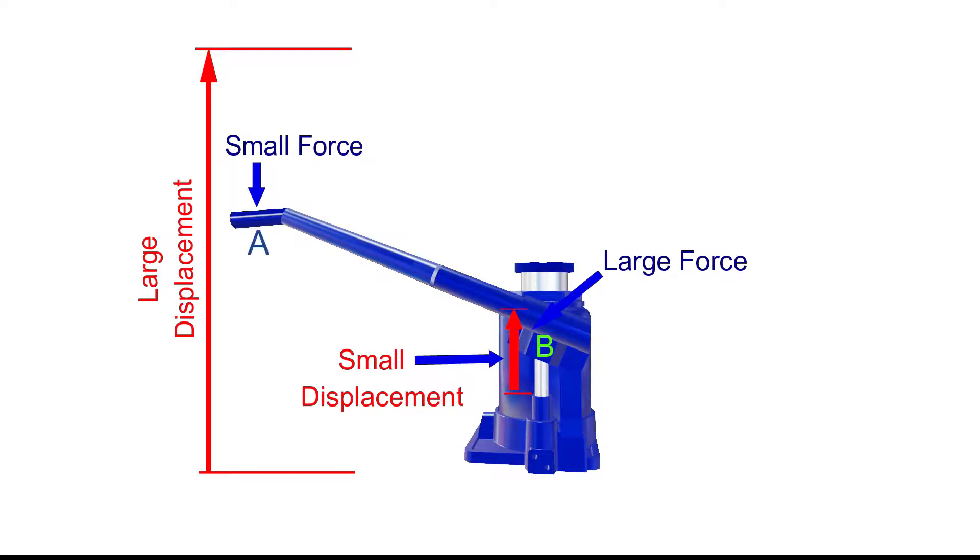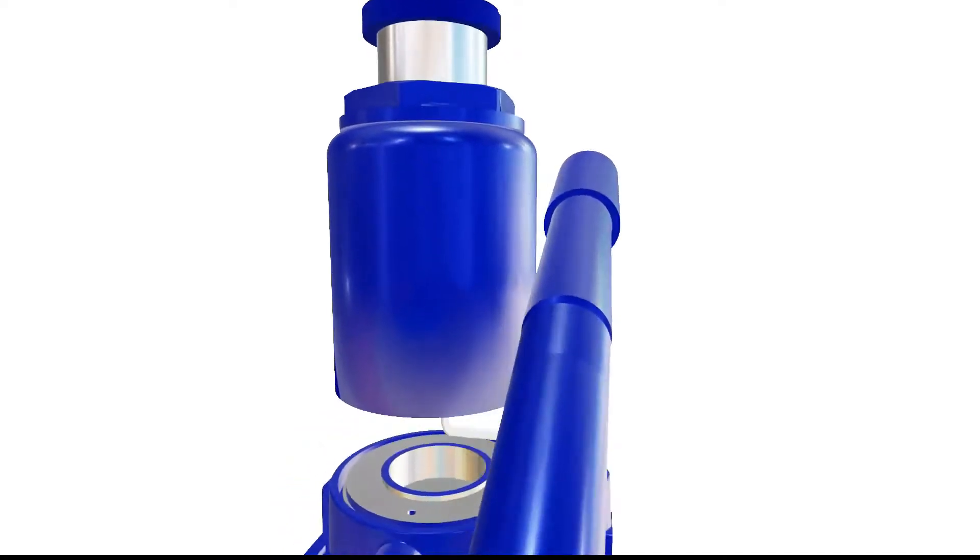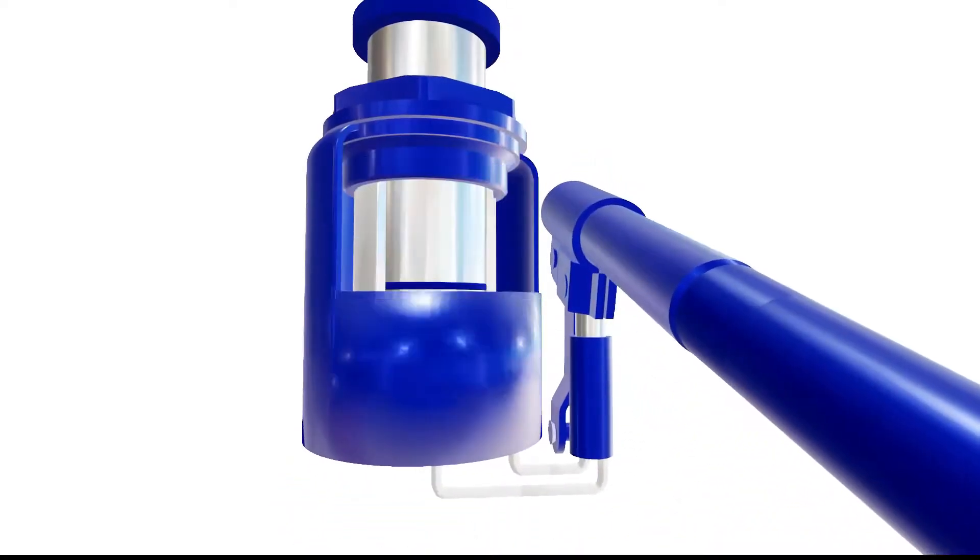If we apply a small force at the point A of the lever and displace it through a long distance, then the point B of the lever moves to a short distance but with greater force. This same principle is used in the hydraulic jack to multiply force. Now let's see some practical circuits showing the working of an actual hydraulic jack.